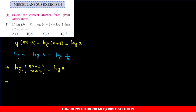Ab log se log cancel ho sakta hai? Base same hona chahiye tab hi hum cancel kar sakte hain. Yahan par base kuch hai nahi, to by default natural base hai - dono ka base same hai, to log ko log se cancel kar sakte hain. Bacha hai: (5x - 9)/(x + 3) = 2.